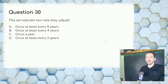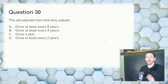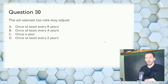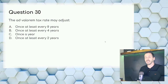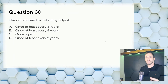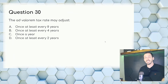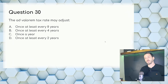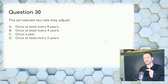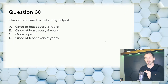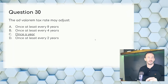Question 30: The ad valorem tax rate — appraised value is reassessed every eight years, the horizontal adjustment of your tax rate is every four years, and the tax rate itself adjusts once a year. Answer: C, once a year.